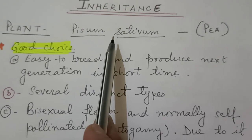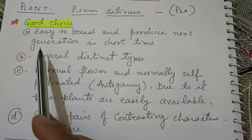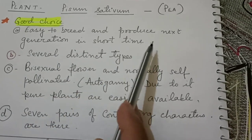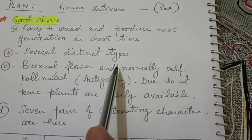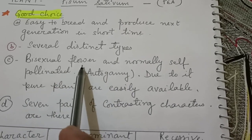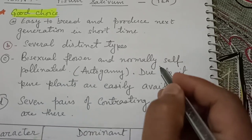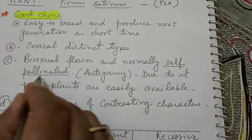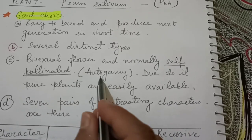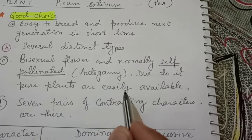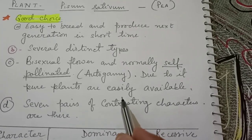Next question for your exam: why did Mendel choose Pisum sativum? For the Pisum plant, it is easy to breed and produce the next generation in a short time. Several distinct types are there in this plant. It has bisexual flowers, meaning both male and female reproductive organs are present and it is normally self-pollinated. Because of autogamy, the plant is pure breed, meaning we can easily get a pure variety that is homozygous.